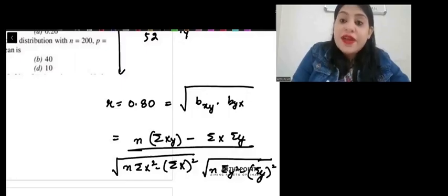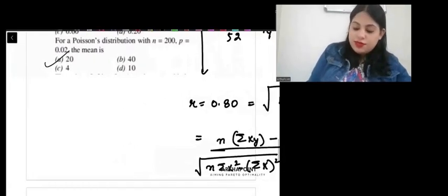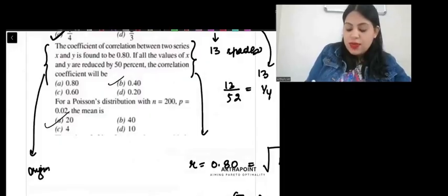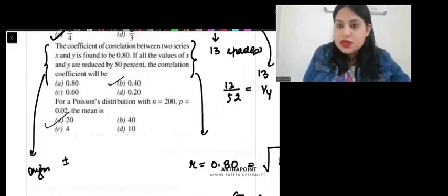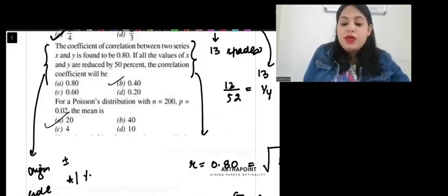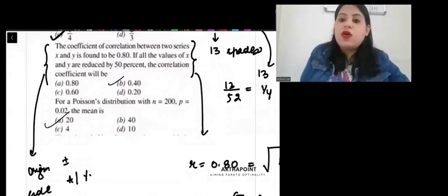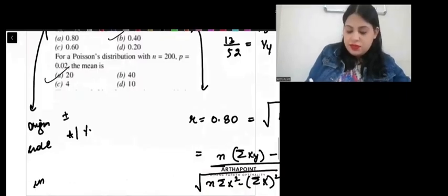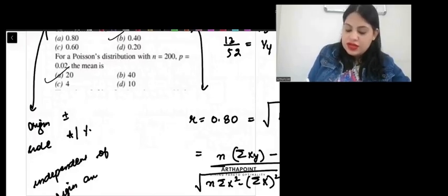This is coefficient of correlation. Now, question is, is it affected by scale or not? Two things: one is scale, one is origin. Origin is when you add or subtract something to the variables. And scale is when you multiply or divide something.